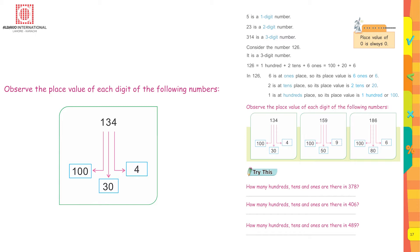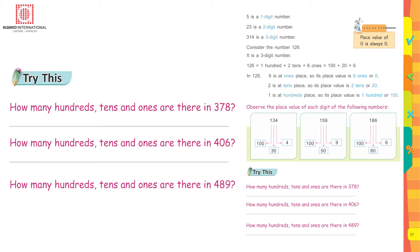Observe the place value of each digit in 134: 1 is at hundreds place, 3 is at tens place, 4 is at ones place. Try this: how many hundreds, tens, and ones are there in 378? There are three hundreds, seven tens, and eight ones. Now do the rest yourself.